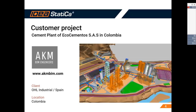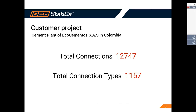Let's go quickly through the project. This is a cement plant in Colombia for EcoCementos, done by our customer AKM Beam Engineers. Their client was OHL Industrial in Spain. To give you a sense of the scale: more than 12,000 connections, more than 1,100 different connection types, and a total steel weight of 1,226 tons.